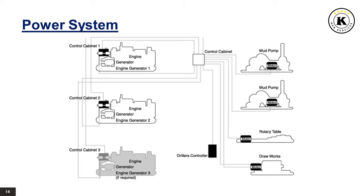The internal combustion engine is the most commonly used engine type due to the availability of diesel fuel, though these engines are in fact inferior to both steam and electric motors. Their torque-speed characteristics may be improved by the use of torque converters, but with a loss in efficiency. On a multi-engine rig, the series of chains and clutches that connect the engines to the drilling equipment is called the transmission.